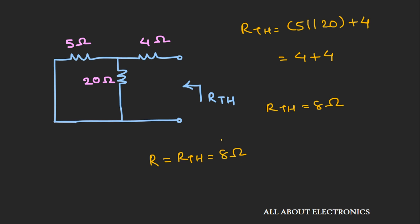The value of the Thevenin's equivalent resistance is 8 ohm. Hence, to get maximum power transfer, the value of load resistance R should be equal to the Thevenin's resistance — that is, 8 ohm.